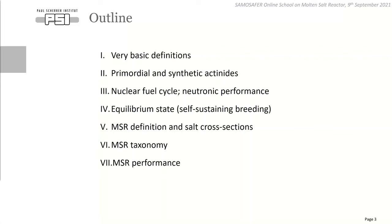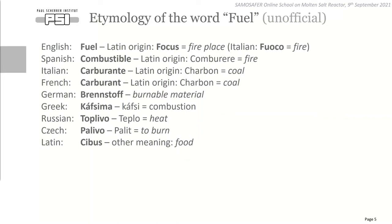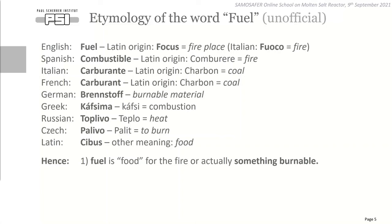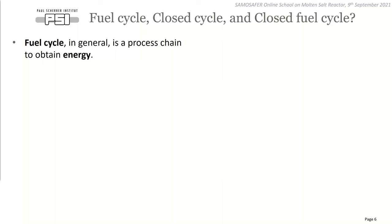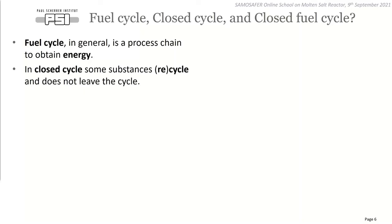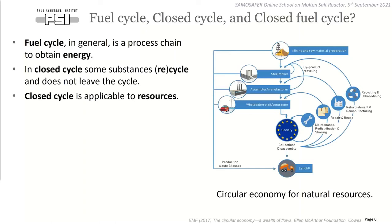Starting with definitions: fuel is food for the fire — something burnable. That's the reason we say nuclear reactors are burning their fuel. This analogy is not so stupid because fire, as well as fission, are chain reactions. A fuel cycle in general is a process chain to obtain energy. In a closed cycle, some substances are recycled and do not leave the cycle — as in circular economy, which already works well for steel.